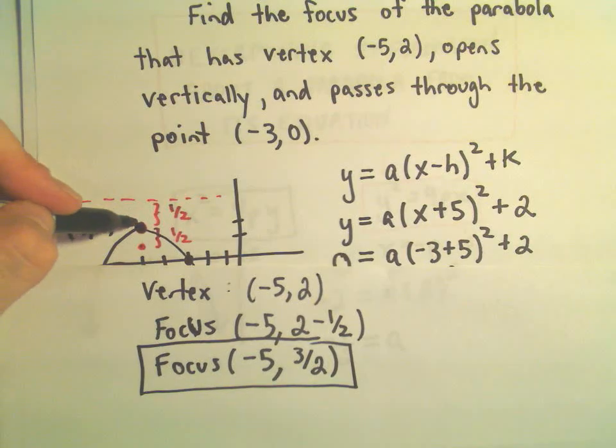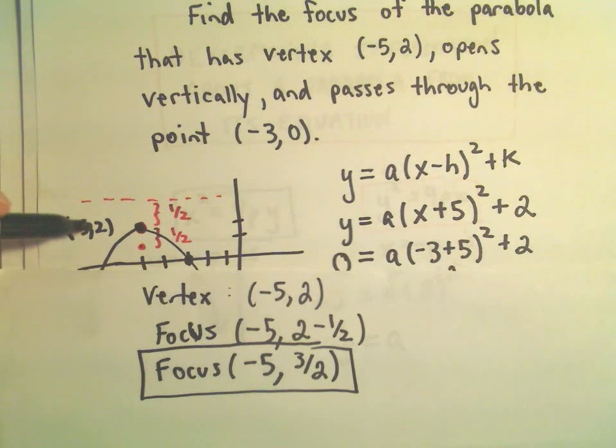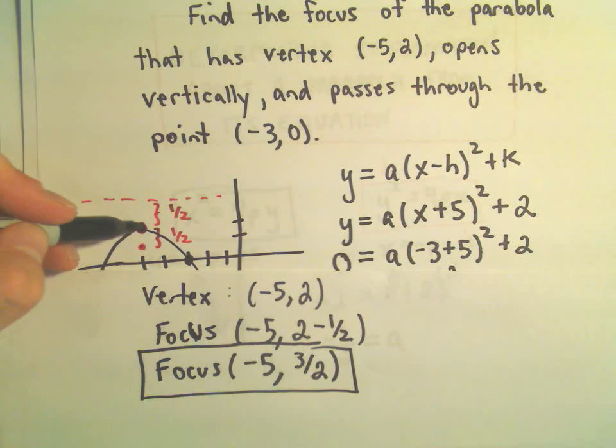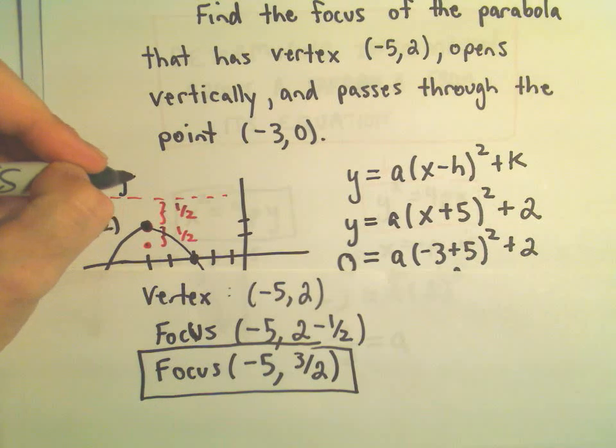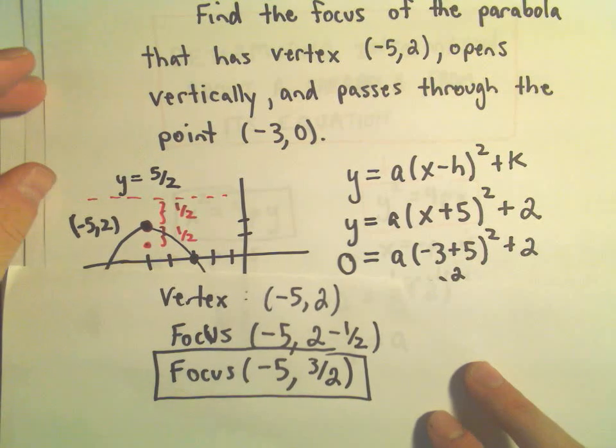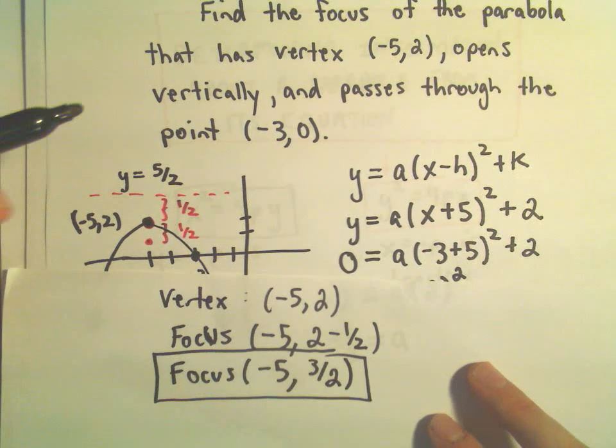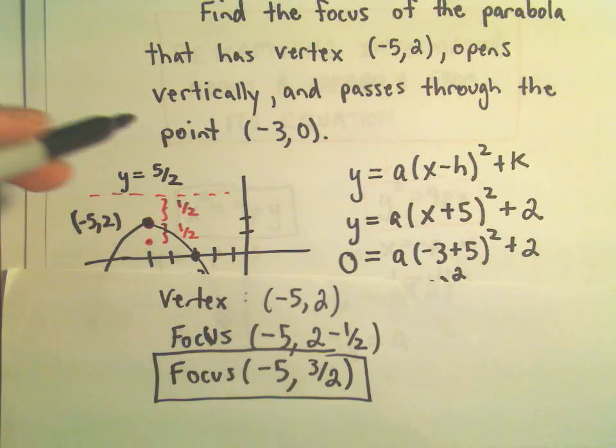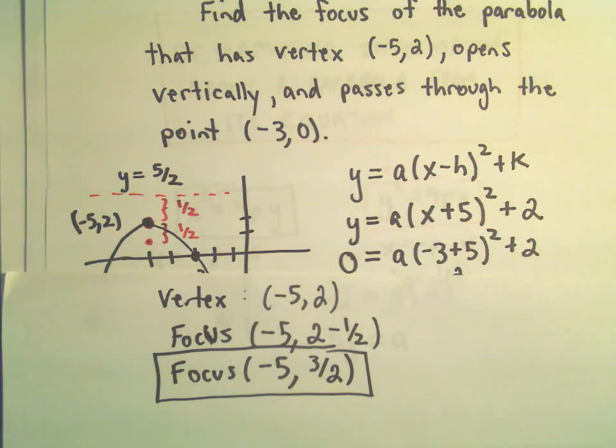We can actually figure out the directrix. The vertex is at y equals 2. If we add 1/2 to that, we would get 2 and a half, or equivalently, 5/2. That would be our directrix. The problem didn't ask for it, but why not go ahead and think about it.